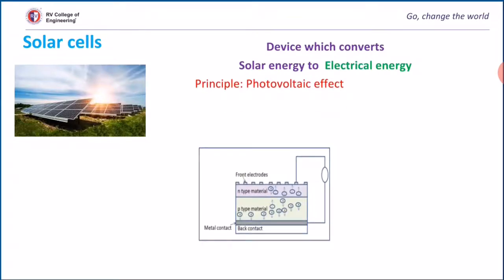The amorphous silicon solar cell is based on the photovoltaic effect. The picture shows a typical solar cell — it consists of n-type and p-type material made up of silicon. In the fabrication of the device, these n-type and p-type materials are joined, and on top of the n-type layer, front electrodes are placed.